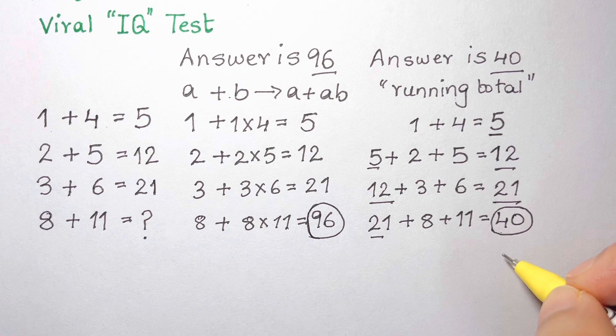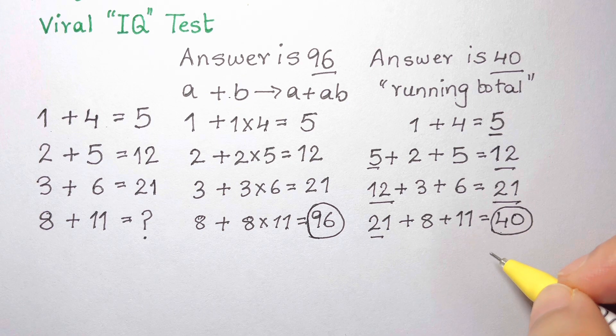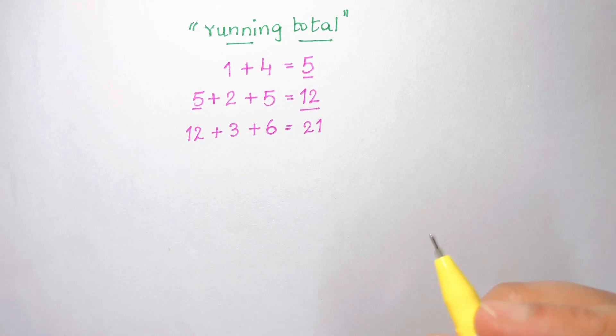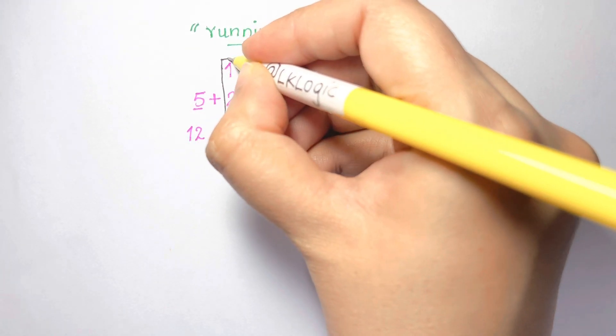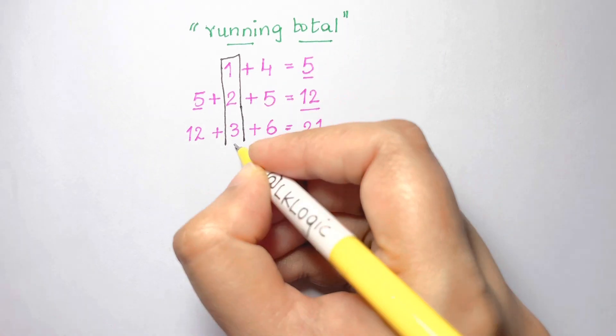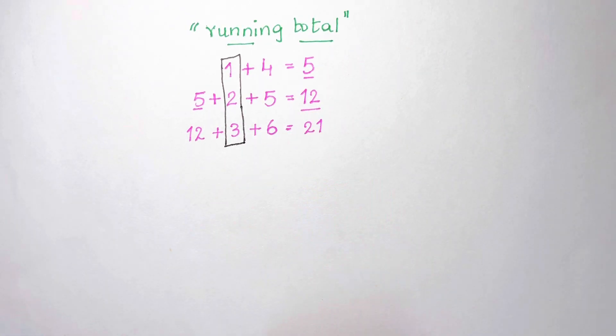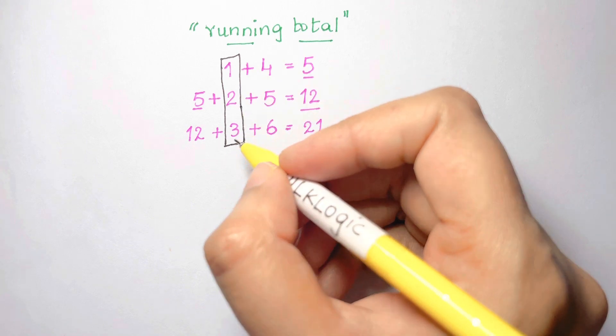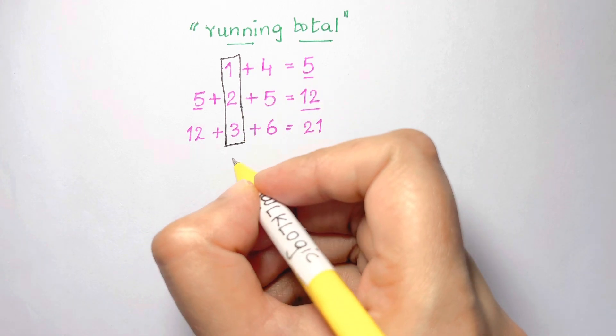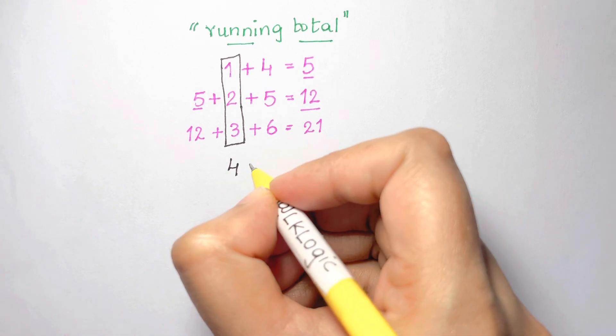There is a way to reconcile these two approaches, and we can see that the answer of 96 can be justified under the running total method. So when we have this running total of different numbers in each line, notice that the first numbers we are already adding are 1 and then 2 and then 3.